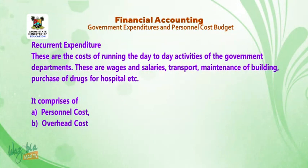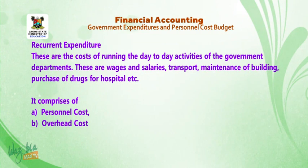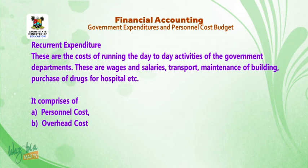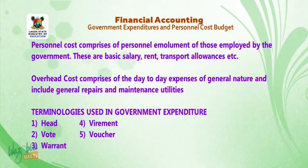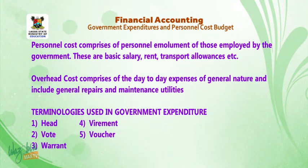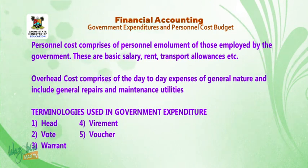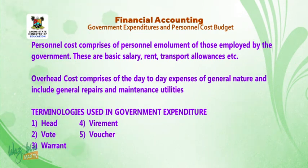Recurrent expenditure comprises the costs of running the day-to-day activities of government departments — wages and salaries, transport, maintenance of buildings, and purchase of drugs for hospitals. It comprises: A. Personnel Cost and B. Overhead Cost. Personnel Cost comprises the personnel emoluments of those employed by the government, such as basic salary, rent, and transport allowances. Overhead Cost comprises the day-to-day expenses of a general nature, including general repairs and maintenance of utilities.